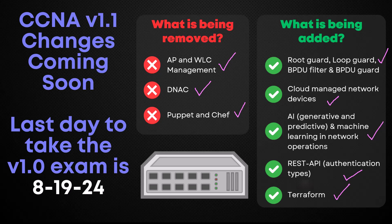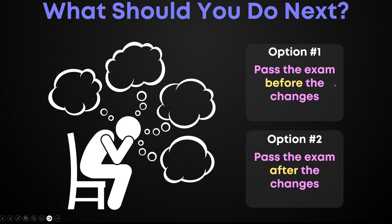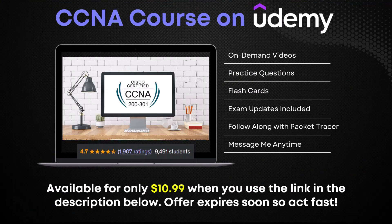Now you know you have to take the current version of the exam by August 19th of this year, and after that date version 1.1 with these changes takes effect. So what's your next step? Option one is to pass the exam before the changes — if you're really close to being ready and don't want to learn these new topics, study a bit harder and try to pass before August 19th. Or, just wait until the changes take place and get up to speed on the new exam topics.